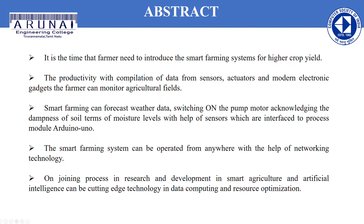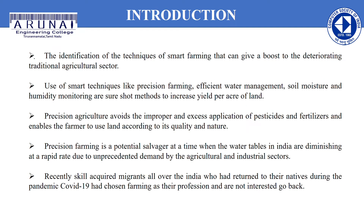First topic is abstract. The time has come for farmers to introduce the smart farming system for higher crop yield. The productivity with the completion of data from sensors and modern electronic gadgets allows the farmer to monitor the agriculture field. The smart farming system can forecast weather data, switching on the pump motor, and acknowledging the soil moisture level with the help of sensors. The smart farming system can be operated from anywhere with the help of networking technologies. Research and development in smart agriculture and artificial intelligence can be cutting-edge technology in data computing and resource optimization.